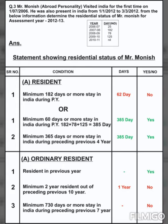Calculating the days: January has 31 days, February has 28 days, and March has 3 days. So 31 plus 28 plus 3 equals 62 days. For the first condition, we write 62 days. The condition requires 182 days, but we only have 62 days, so the first condition is not fulfilled.